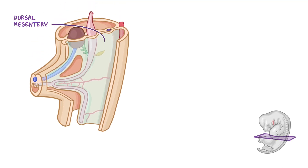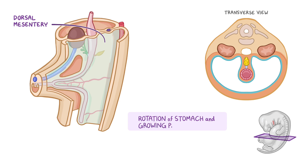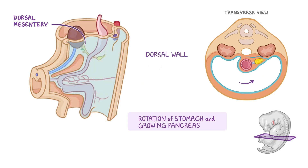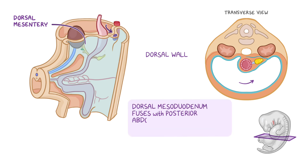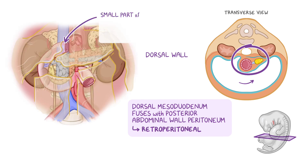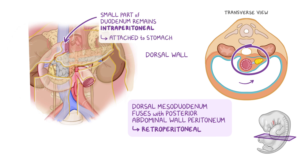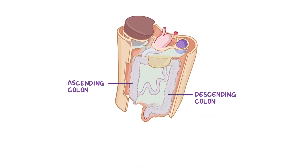Now let's see how the embryonic dorsal mesentery gives rise to adult structures. Due to the rotation of the stomach and the growing pancreas, the duodenum moves from the midline to the right side of the peritoneal cavity. This pushes the duodenum and pancreatic head against the dorsal body wall, where the right surface of the dorsal mesoduodenum fuses with the posterior abdominal wall peritoneum, making these two organs secondarily retroperitoneal. However, a small part of the proximal duodenum does remain intraperitoneal, which is the part attached to the stomach. Similarly, the ascending and descending colon will be pushed to either side against the posterior abdominal wall, where their mesenteries will also fuse with the peritoneum. However, the appendix and inferior end of the cecum retain a free mesentery.